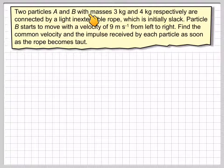Two particles A and B with masses 3kg and 4kg respectively are connected by a light inextensible rope which is initially slack. The particle B starts to move with a velocity of 9 m per second from left to right. Find the common velocity and the impulse received by each particle as soon as the rope becomes taut.